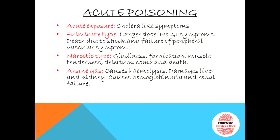The fulminate type occurs when more than three grams of arsenic is taken. In this type there are no gastrointestinal symptoms. It is important to remember that acute arsenic poisoning causes cholera-like symptoms — if a question asks which irritant shows cholera-like symptoms, the answer is arsenic.